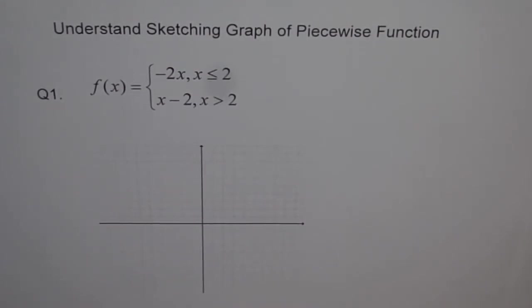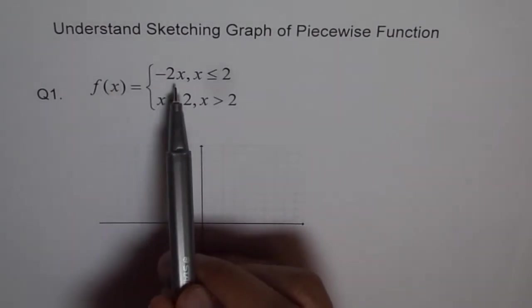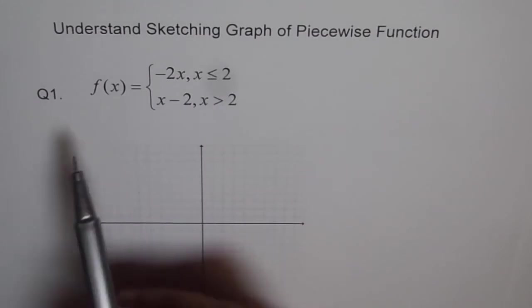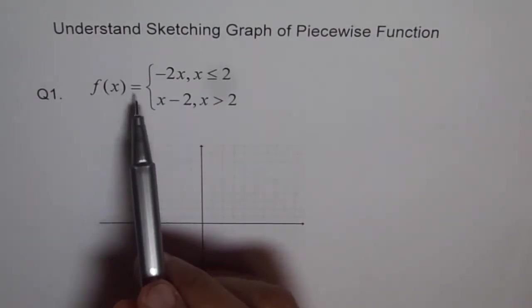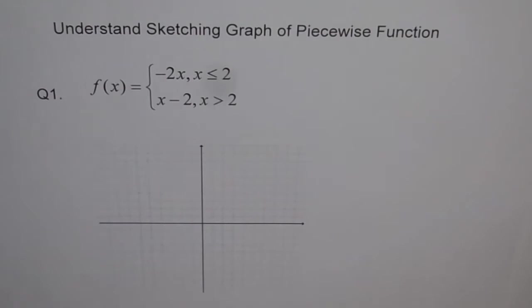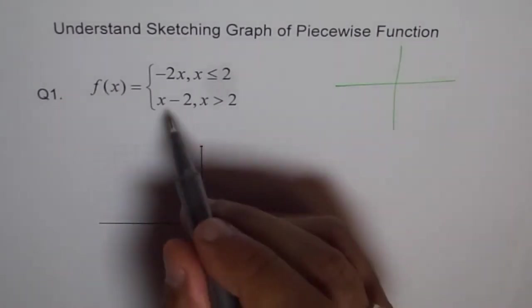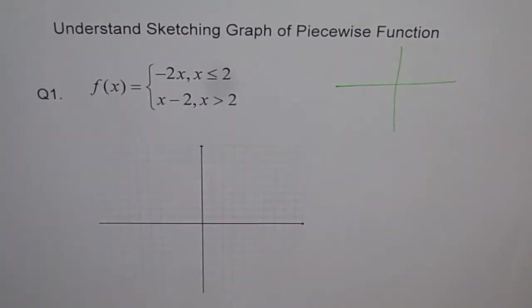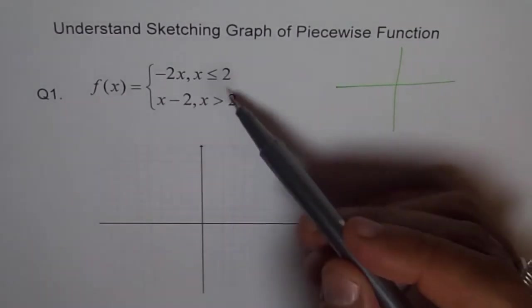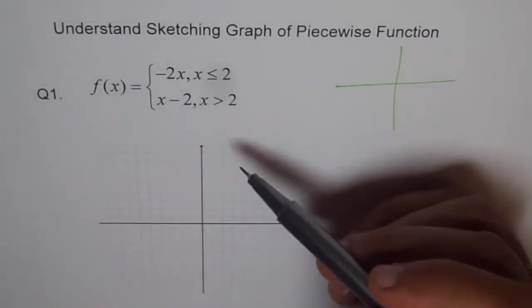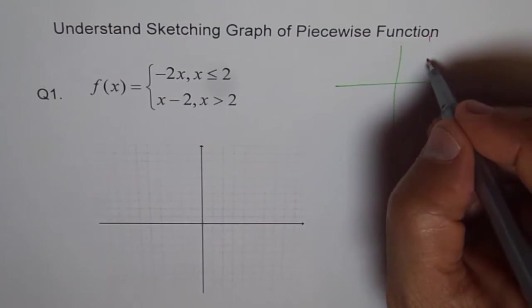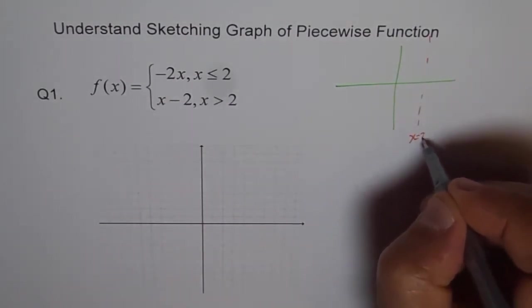Here we have a simple piecewise function: f of x equals -2x if x is less than or equal to 2, and f of x equals x minus 2 if x is greater than 2. When you get a piecewise function, we should try to understand like this: there are in this case 2 pieces, and where are these 2 pieces divided? They are divided at this point, and the point here is 2. So, we will just think this is divided at 2. This is the line at x equals 2.